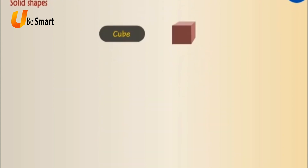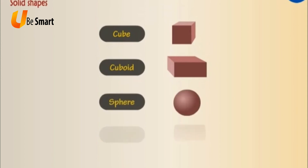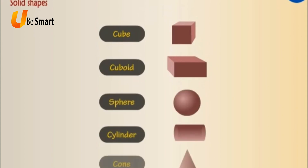Solid shapes are cube, cuboid, sphere, cylinder and cone.